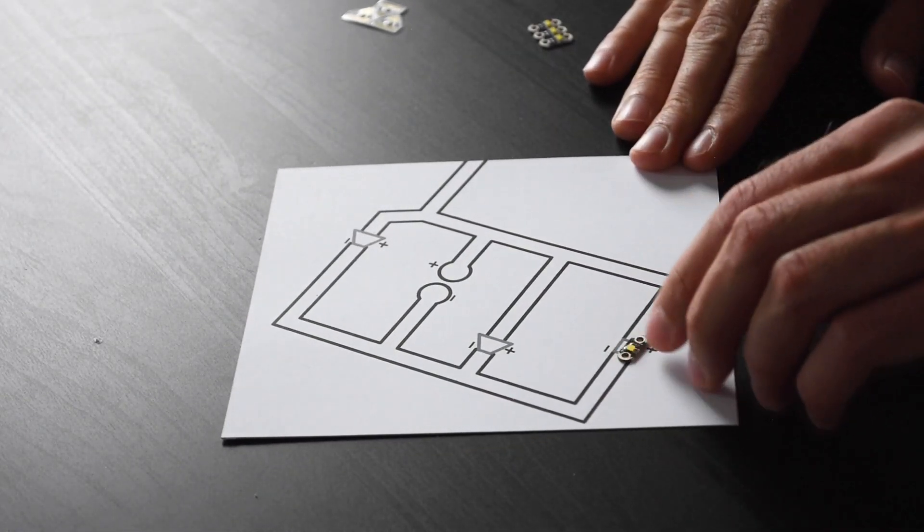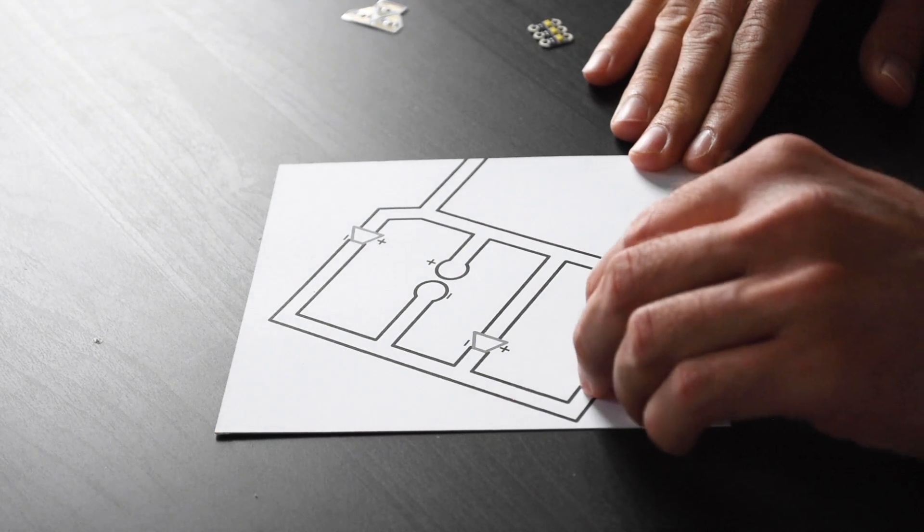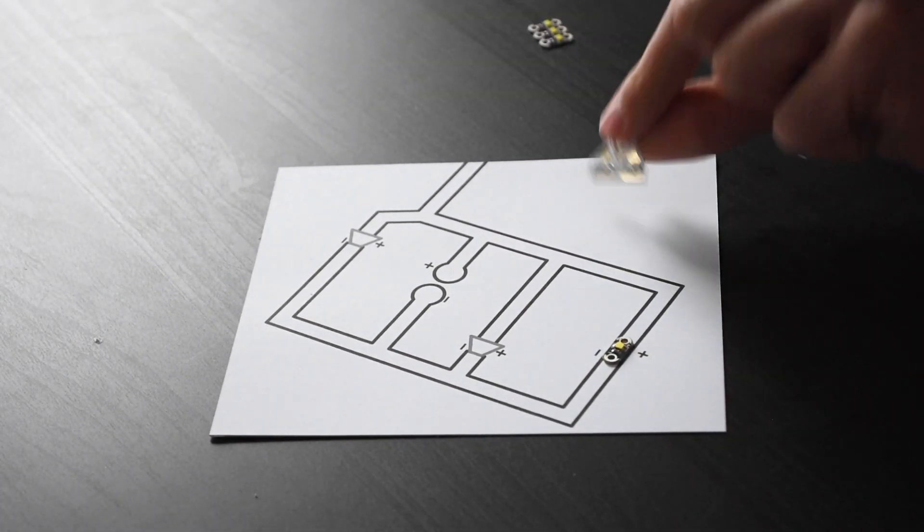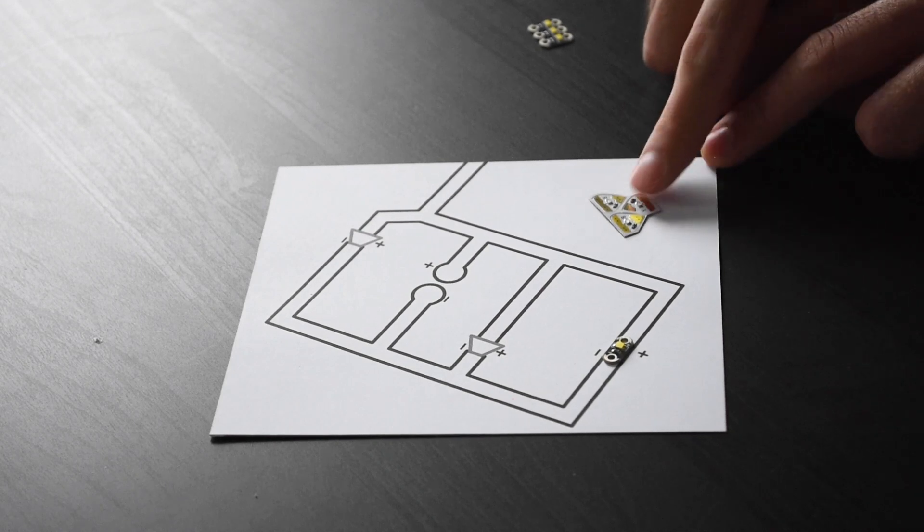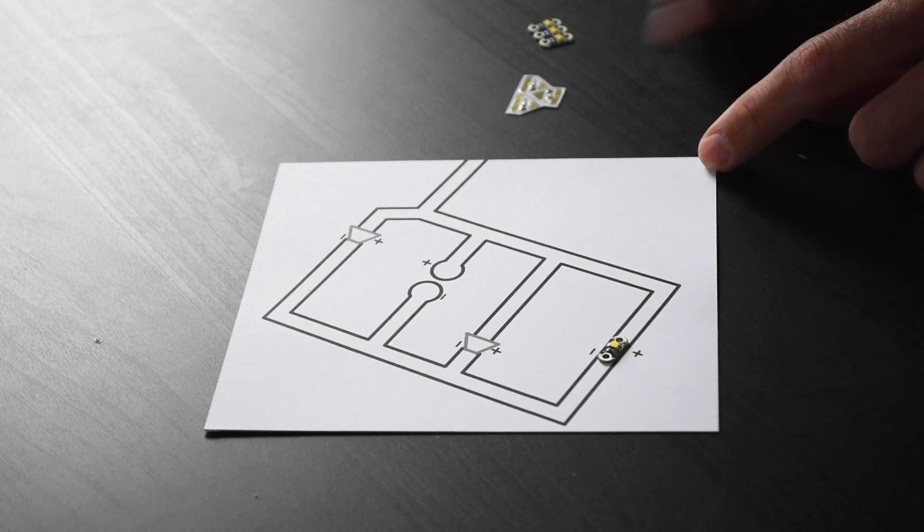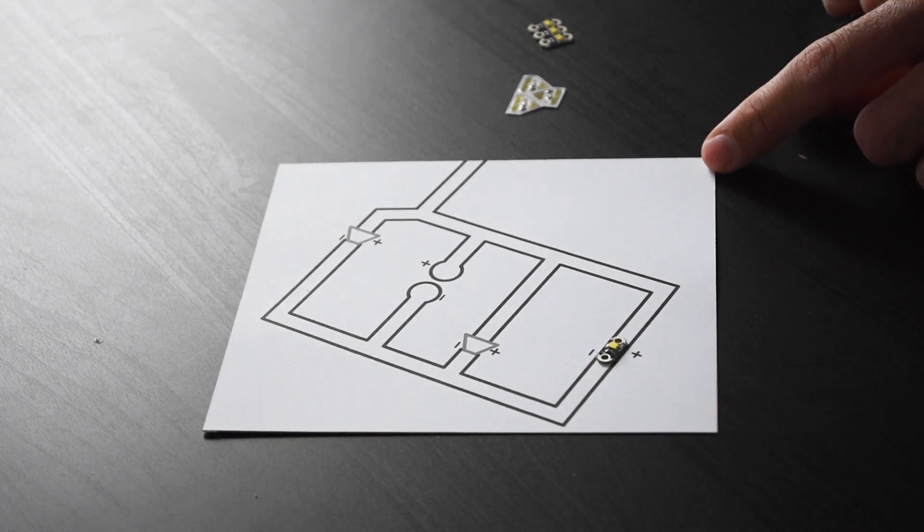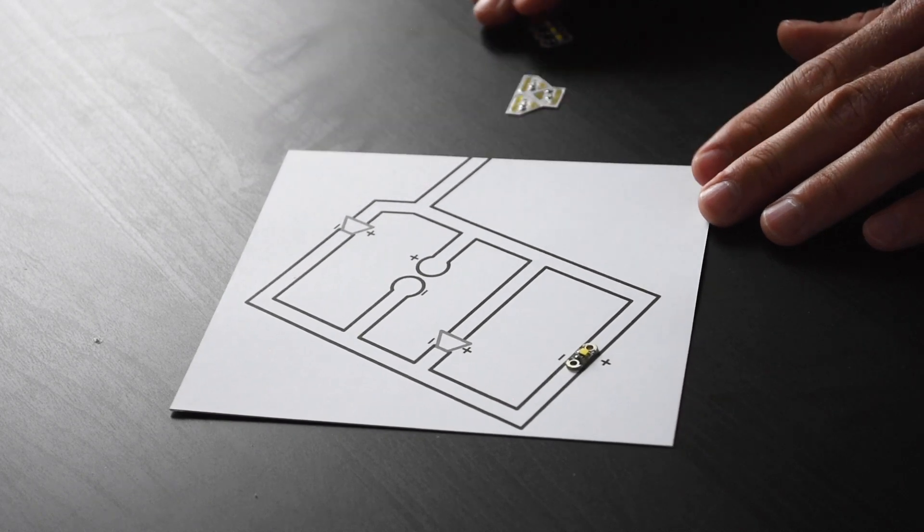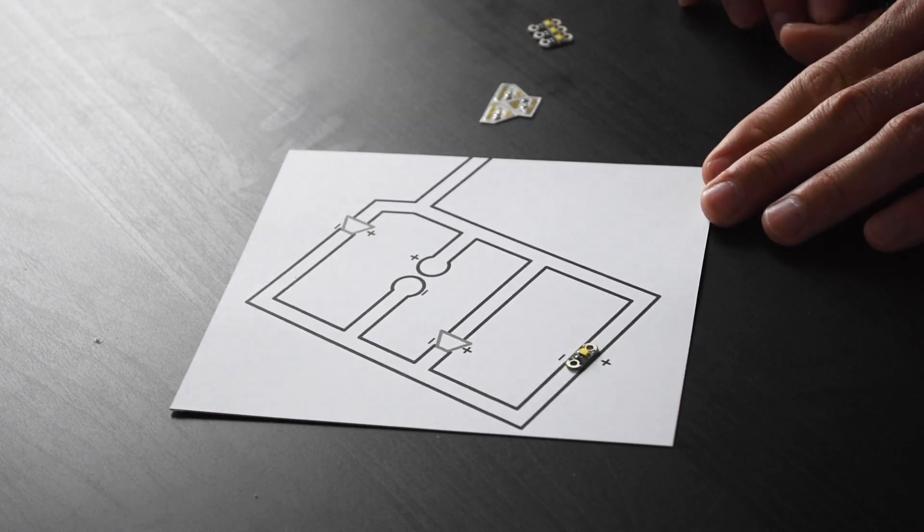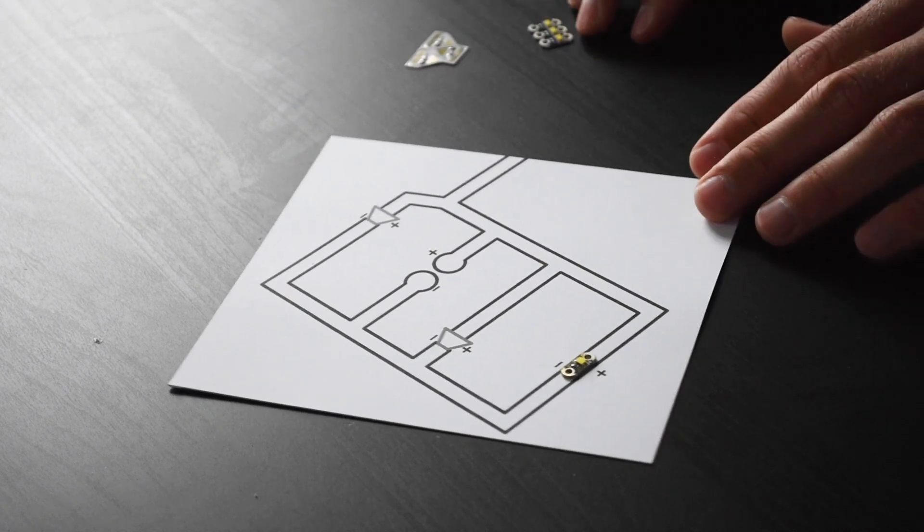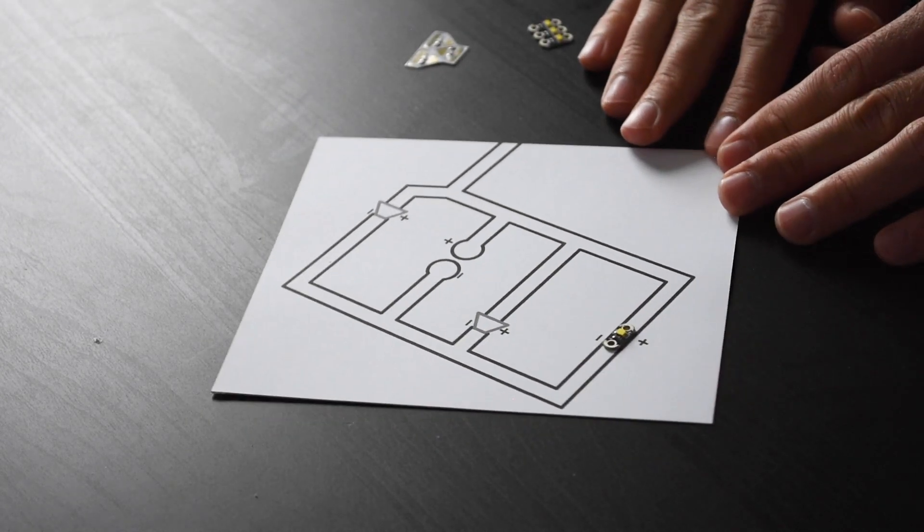The LEDs that we're using are the Spark Fun LED, the tiny one here, tiny but powerful white LED. We're also using two Chibitronic LEDs, these bad boys here. They come in different colors—these ones are yellow, red, and blue. You can also get them in white or in tropical colors. They're great because they're already adhesive, which makes it very easy to play with.